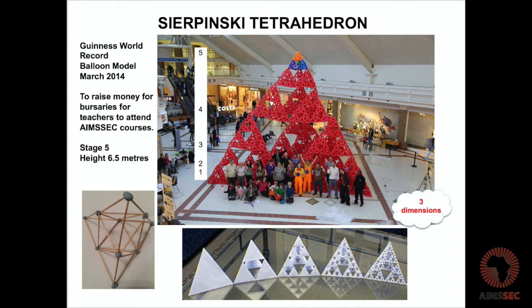The models on the table, reflected there on the glass, show five models going from right to left: stage 4, stage 3, stage 2, stage 1, stage 0. Each time we have a quarter of the number of tetrahedra, the edge lengths are doubled, the area multiplied by a scale factor of 4, and the volume multiplied by a scale factor of 8.